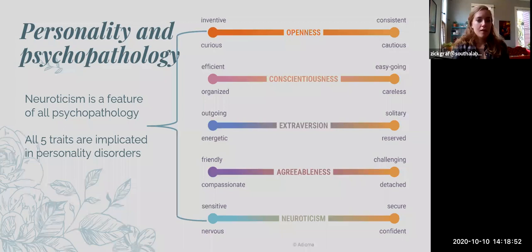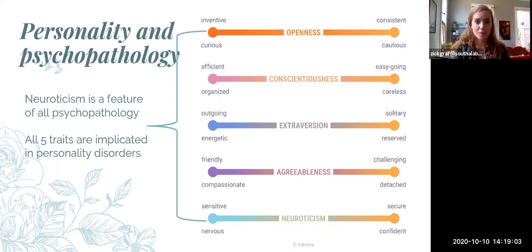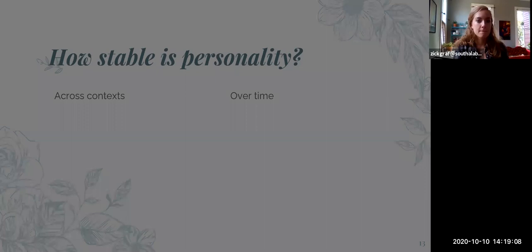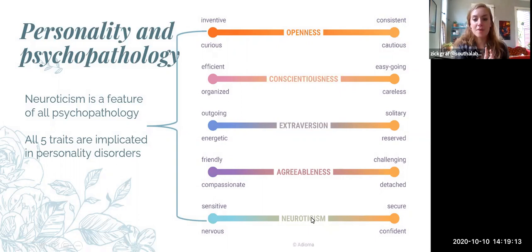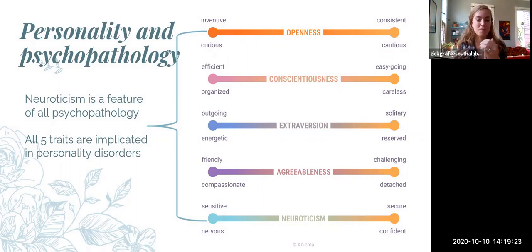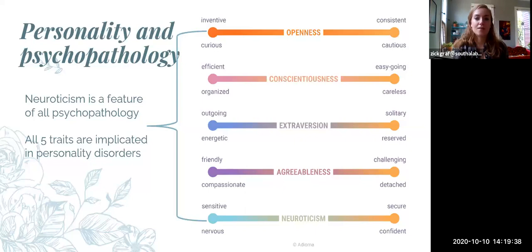Neuroticism is a feature of all psychopathology, especially anxiety and depression. Another difference between personality and symptom disorders is that all five personality traits are implicated in different ways in personality disorders — which is simply not true about anxiety or depression. Someone can be depressed and agreeable, extroverted, conscientious, or close-minded. Someone can be anxious and open to new experiences, but anxiety impairs their actual ability to have them without changing their personality. Personality disorders are defined by typically abnormally high or abnormally low levels of each of these traits — that's another key difference.